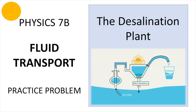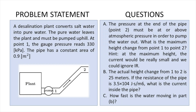So the problem that we're going to be working with today — please make sure to pause the video in order to copy the problem on your notes so that we can follow along. We have a water plant that converts salt water into pure water. The pure water leaves the plant and must be pumped uphill. At point one the gauge pressure reads 330 kilopascals, and the pipe has a constant area of 0.9 meters squared. Part a asks: the pressure at the end of the pipe must be at or above atmospheric pressure in order to pump water out — what is the maximum height change from point one to point two? Hint: at the maximum height the current would be really small and we would ignore IR.